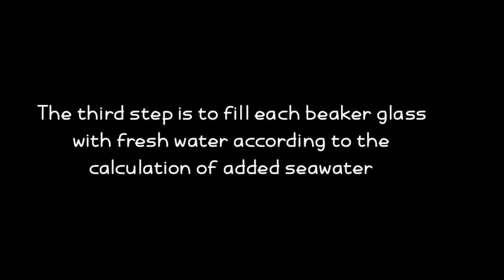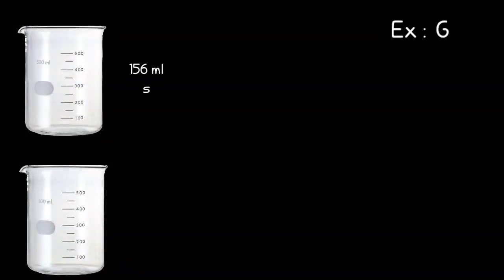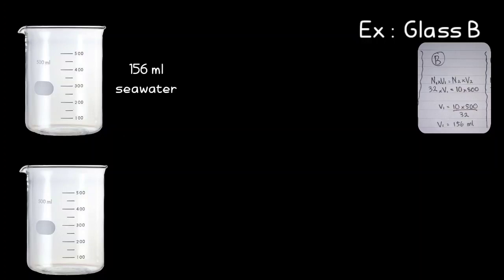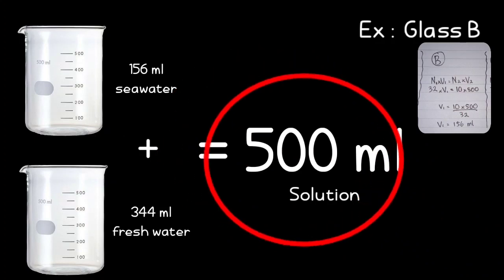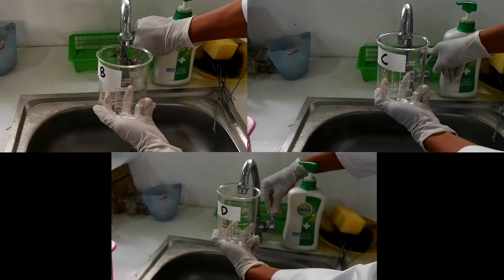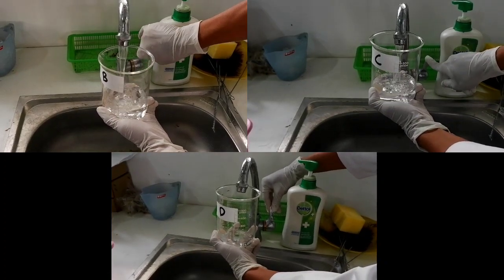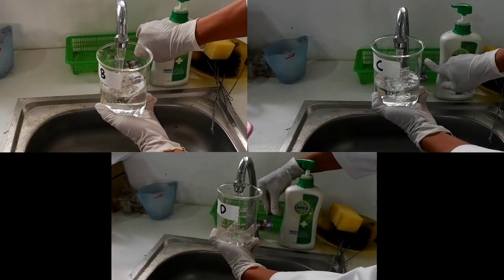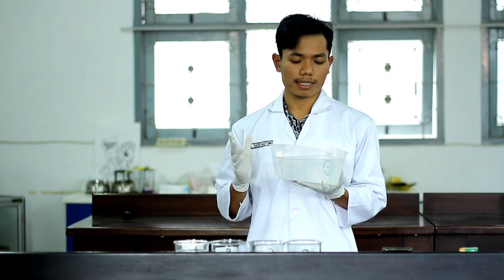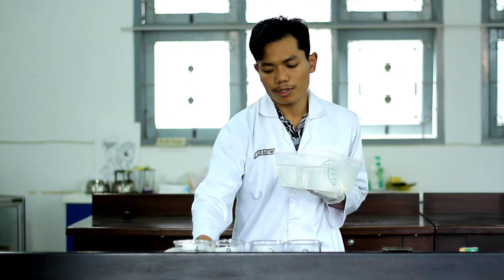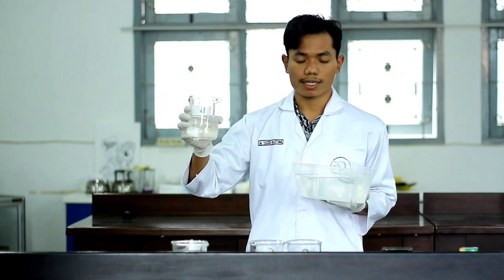The third step is to fill each beaker glass with fresh water according to the calculation of added sea water. For example, based on the calculation for glass B, the added sea water is 156 ml, so we fill glass B with 344 ml of fresh water to make 500 ml total. Then we fill the beaker glass according to the calculation. This is sea water, and I'm going to mix it with the fresh water to get the desired salinity.